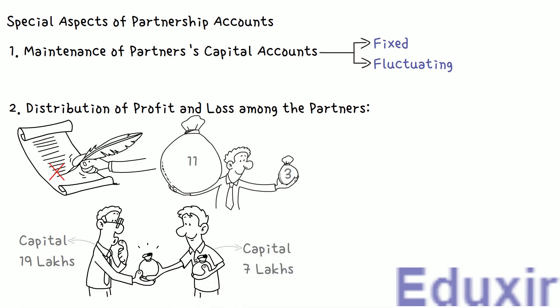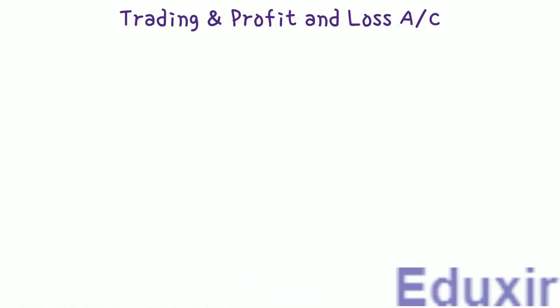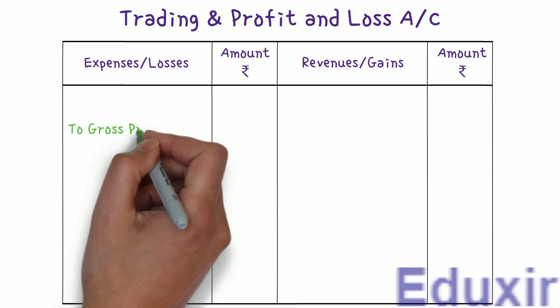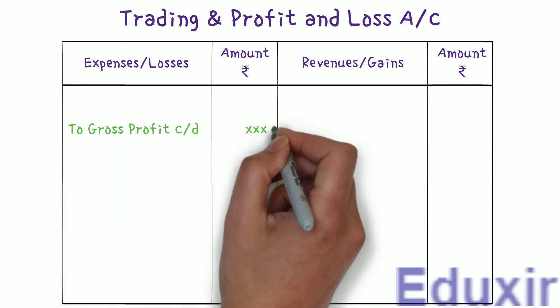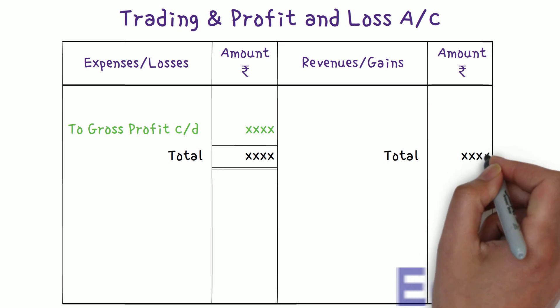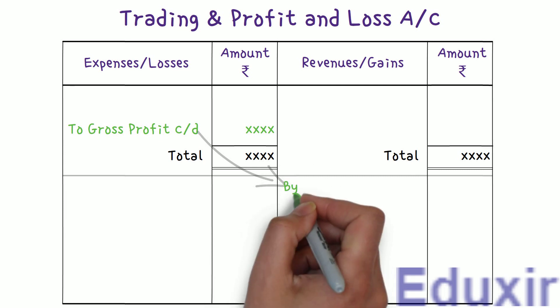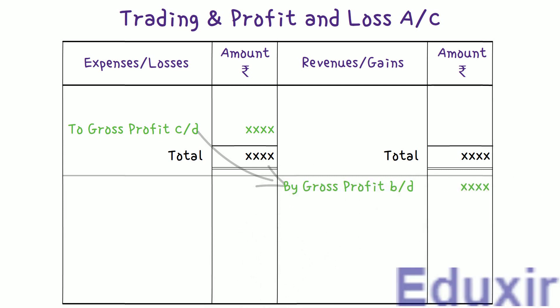As part of preparing financial statements, we first prepare the trading account, which contains items directly related to trading. If there is a credit balance, it represents the gross profit, which is carried down. Once transferred to the profit and loss account as gross profit brought down, we transfer balances from various other expenses and revenue accounts. After considering all expenses and revenues, the final balance represents the net profit.